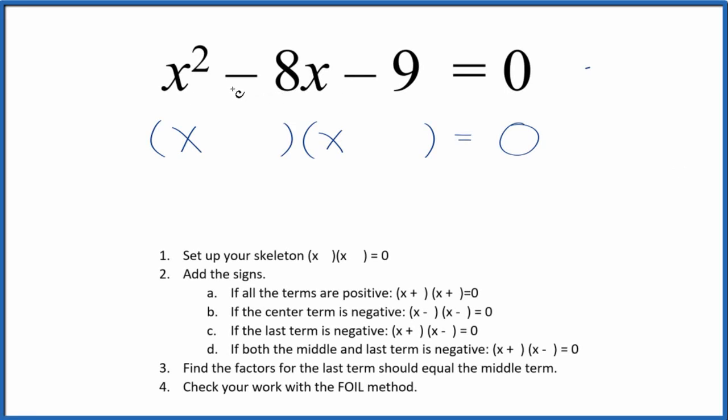Let's factor the equation x squared minus 8x minus 9 equals 0. The first thing we do is set up a skeleton equation. This is our skeleton equation here.